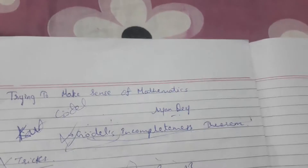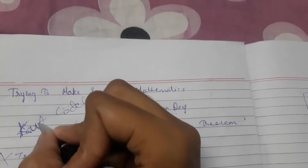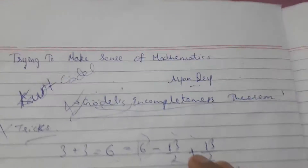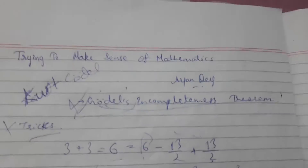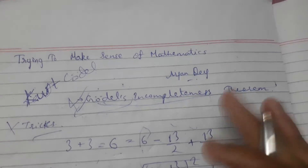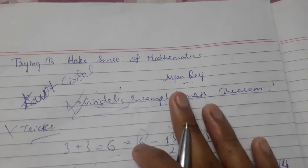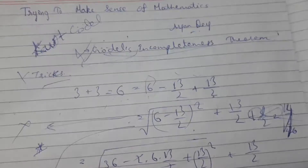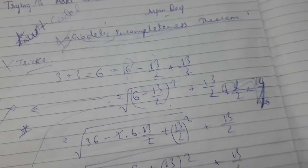Gödel's theorem proves that you cannot prove that a set of axioms is consistent without using another set of axioms. So it proved that basically mathematics in itself is incomplete.